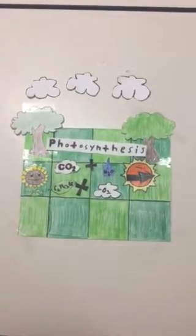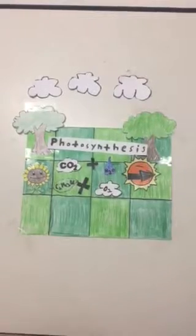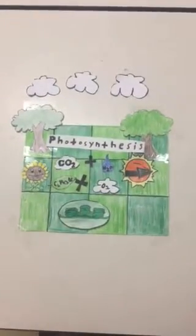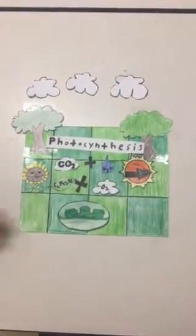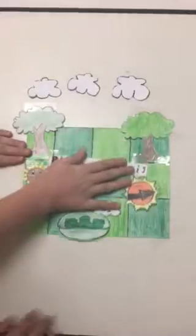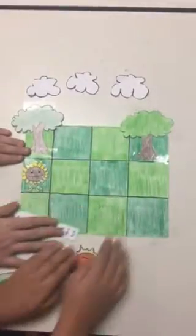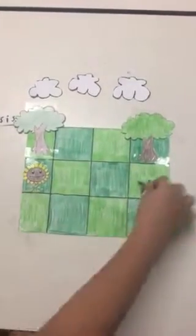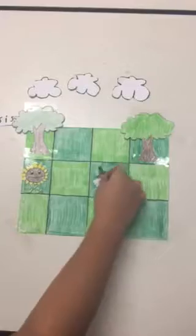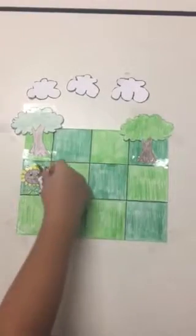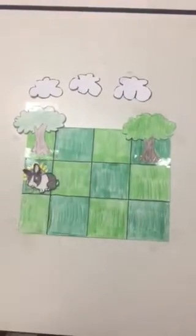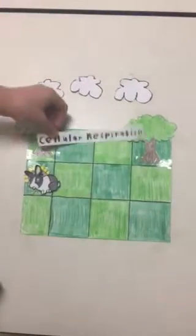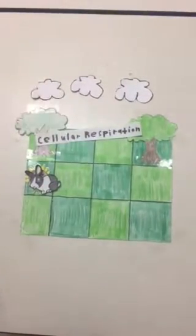Photosynthesis occurs in the chloroplast. A rabbit comes by and takes a bite of the flower in order to go through cellular respiration.